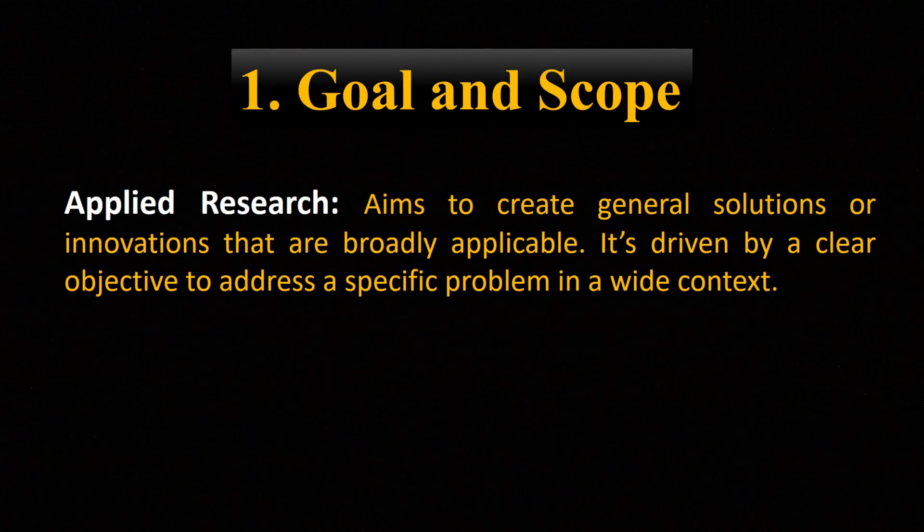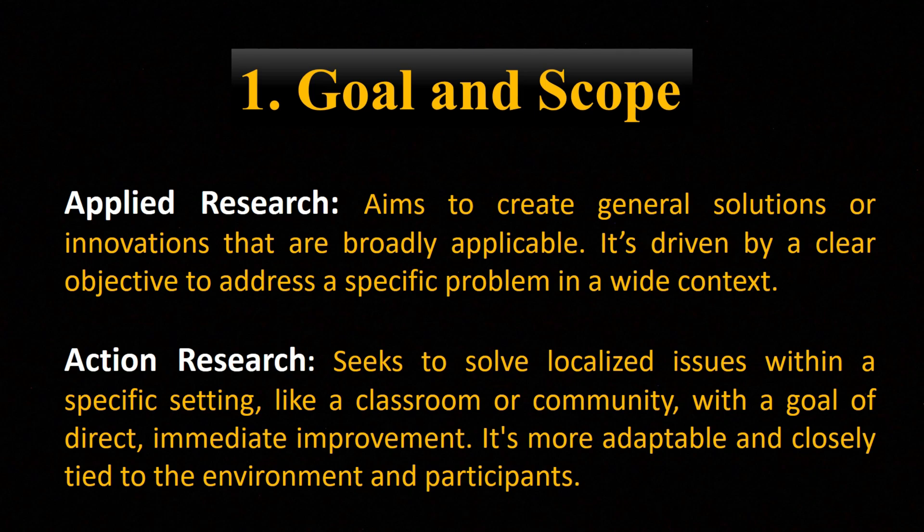Key differences — Goal and Scope: Applied research aims to create general solutions or innovations that are broadly applicable, driven by a clear objective to address a specific problem in a wide context. Action research seeks to solve localized issues within a specific setting, like a classroom or community, with a goal of direct, immediate improvement. It's more adaptable and closely tied to the environment and participants.